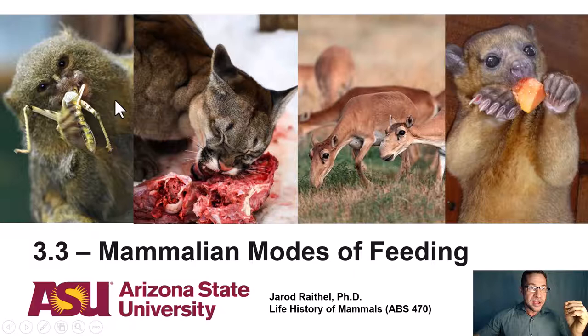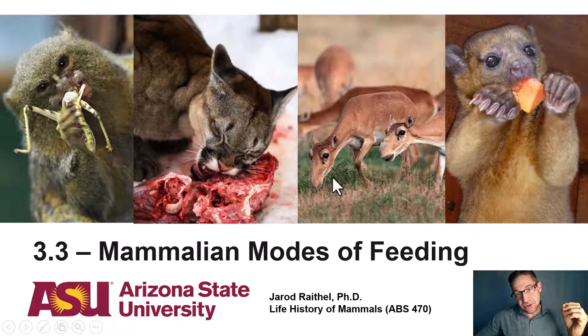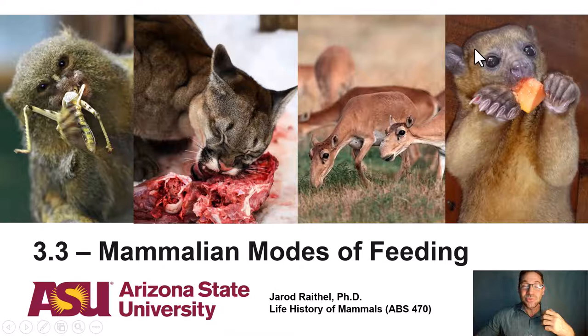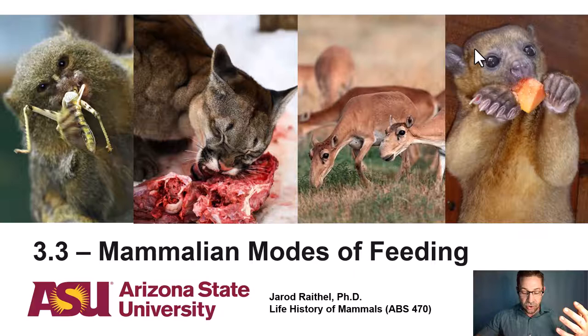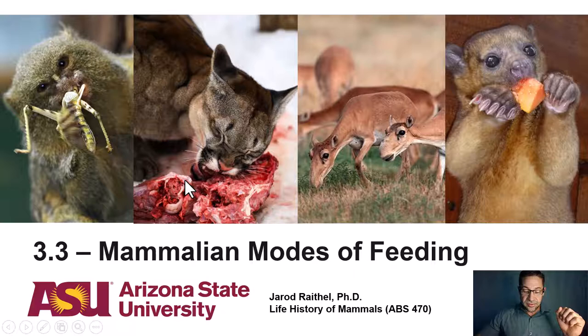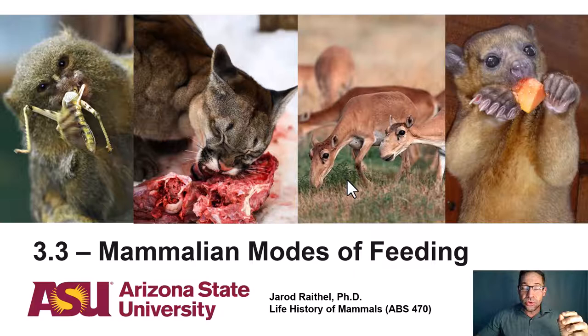Beginning with insectivory, as exhibited by this pygmy marmoset; carnivory, as shown by this mountain lion; herbivory and its many different forms, demonstrated by the saiga antelope; as well as frugivory, exhibited by this adorable nocturnal kinkajou, as well as a whole variety of other strategies. I'll also focus on anatomical adaptations in skull structure and jaw musculature, a quick review of dentition, as well as the digestive tracts that support each of these different modes of feeding. This lecture aligns with chapter seven in your textbook, entitled Modes of Feeding.